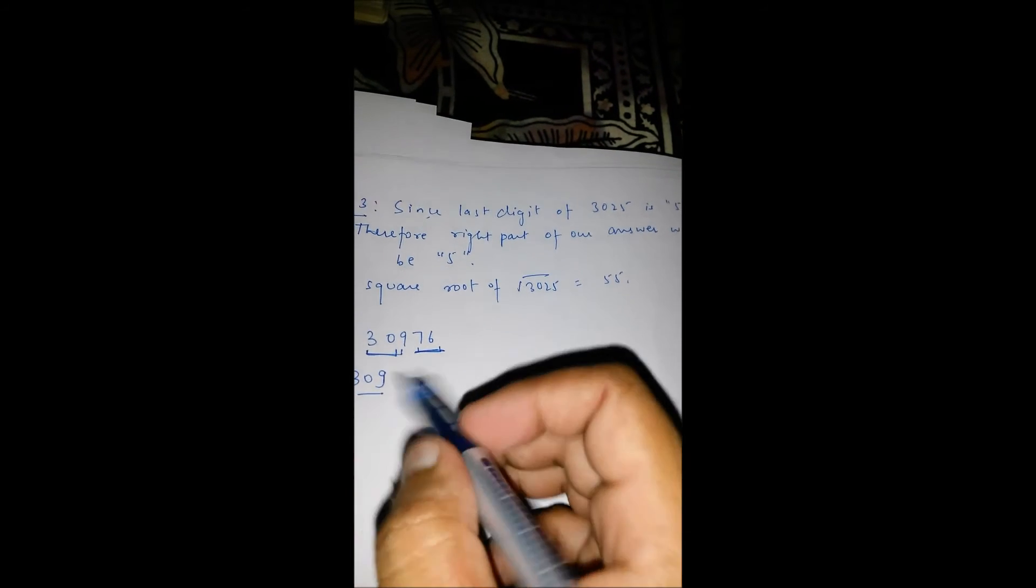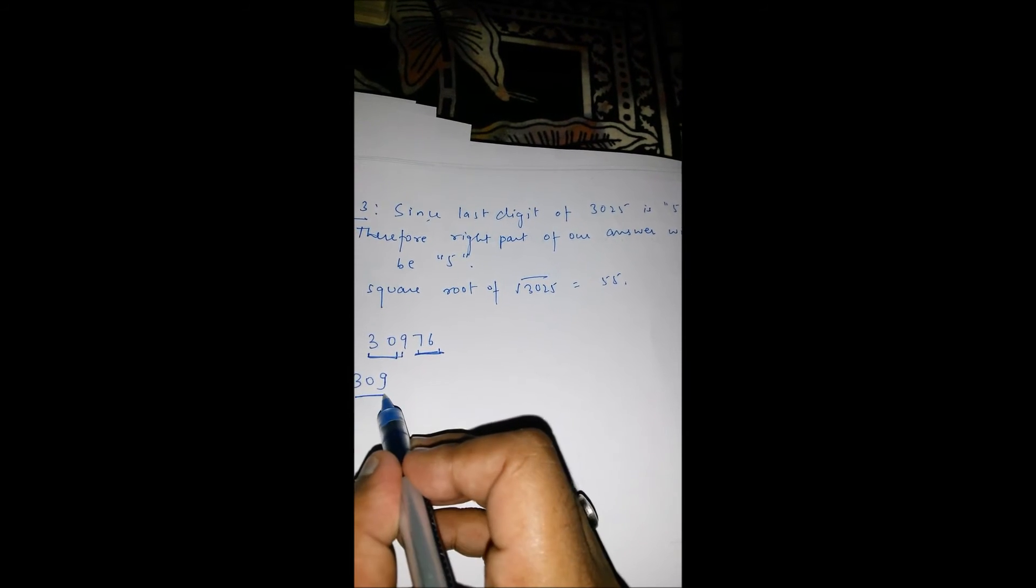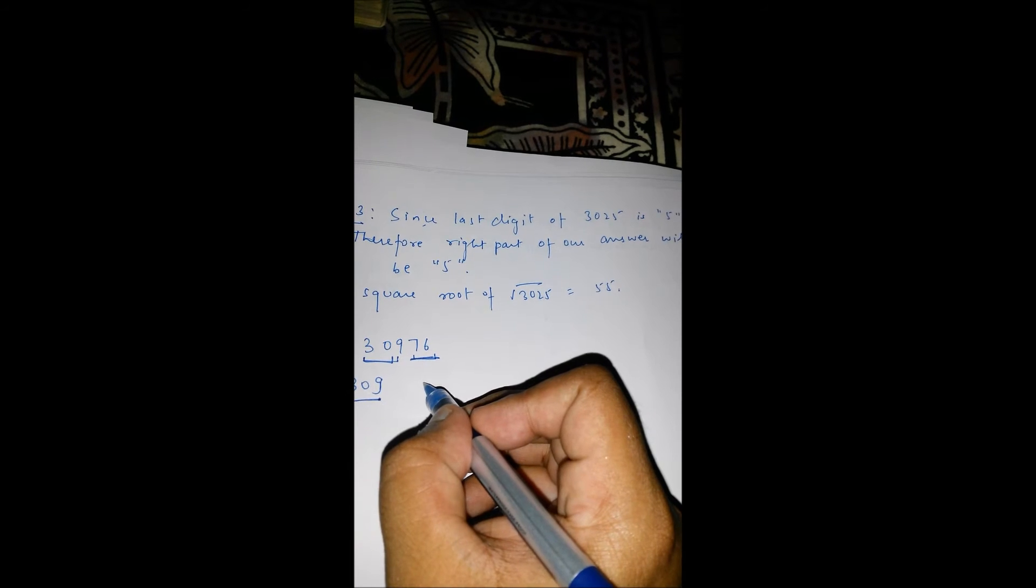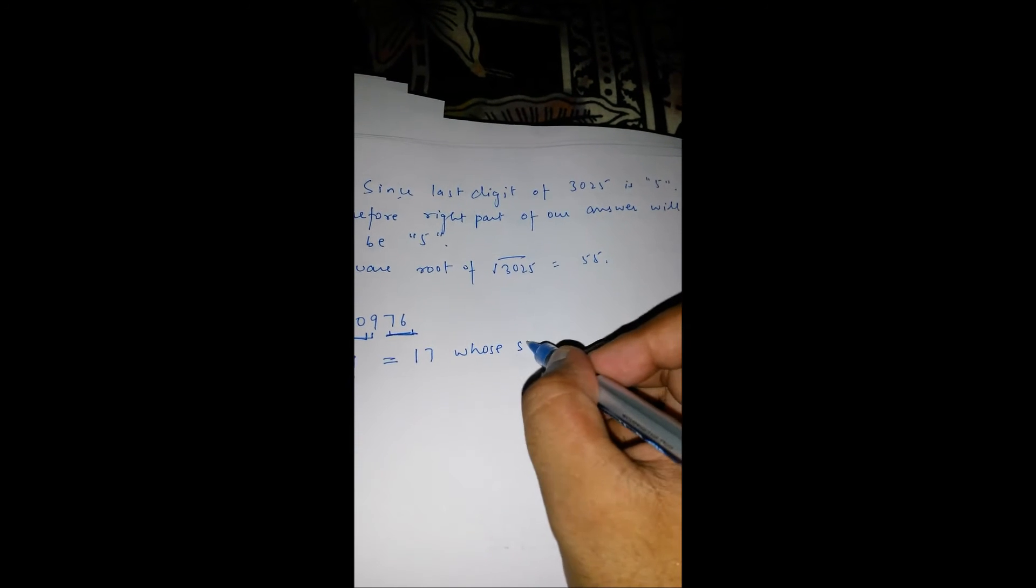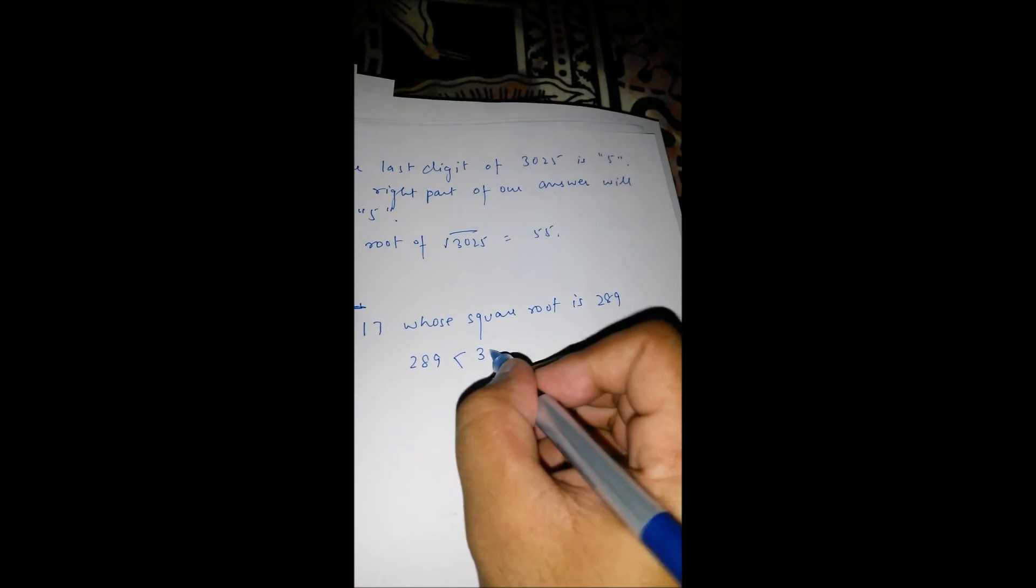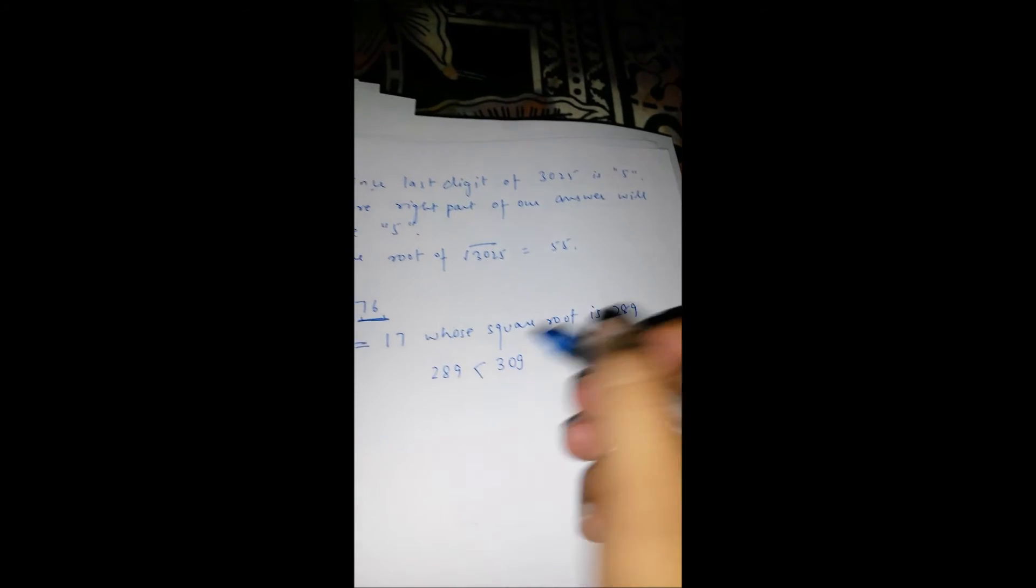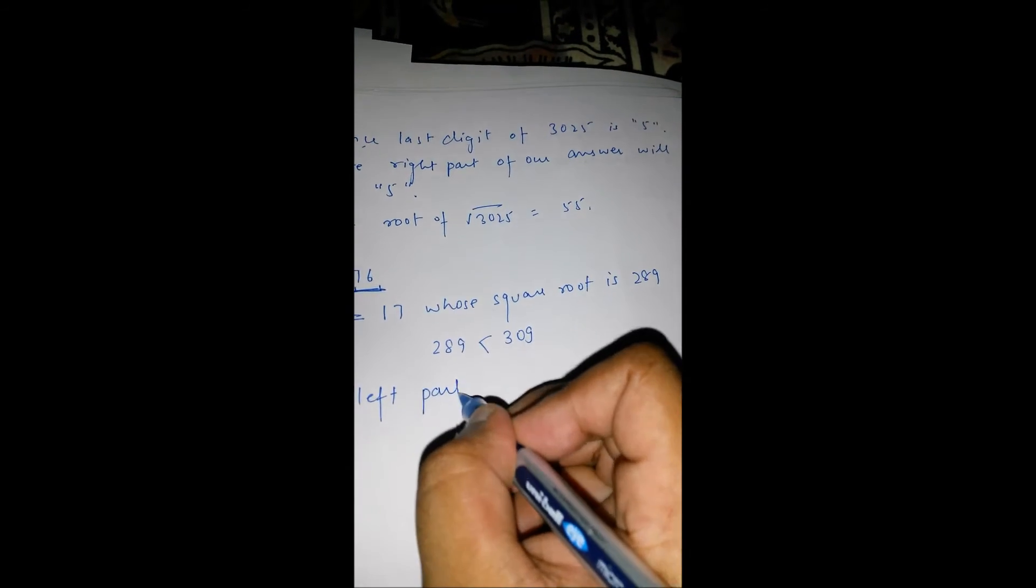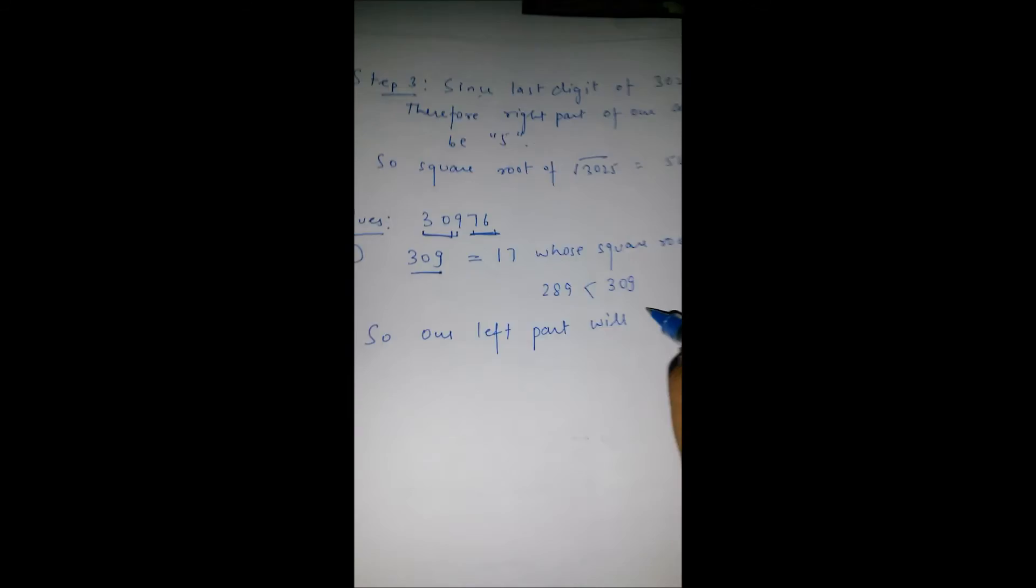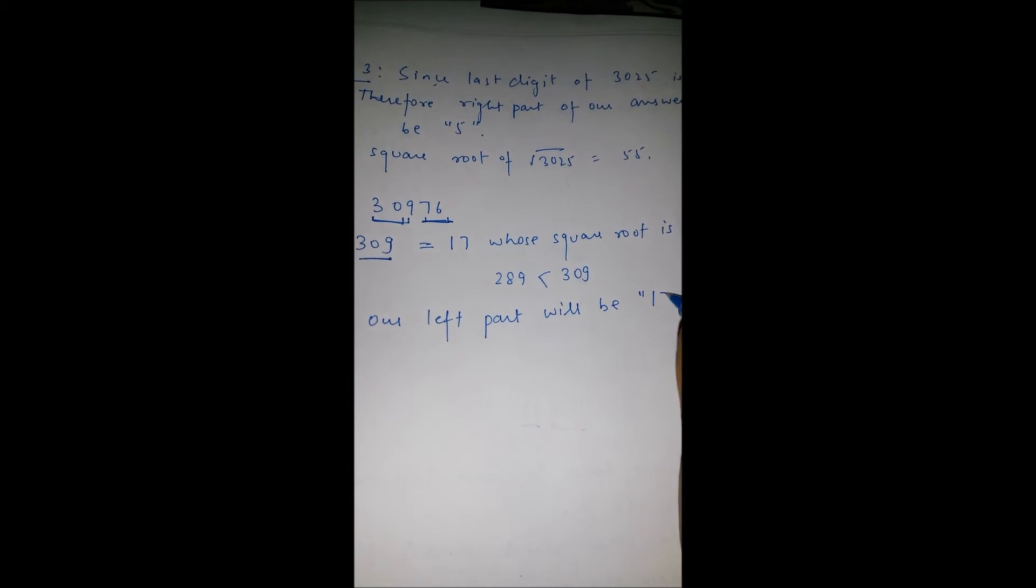Calculate the nearest value or lesser value than 309, which is 17. The square is 289. 289 is lesser than 309 or nearest value to 309. So, our left part will be 17.